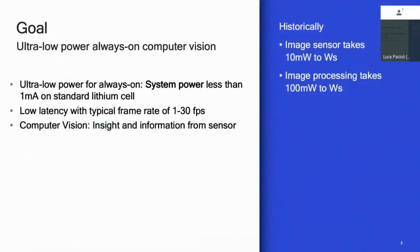What is ultra-low power always-on computer vision? Our target was to have this sensor at about 1 milliamp on a lithium-ion battery. This is important because most sensors that are always-on use about this power. You can think of accelerometers for pedometers, or audio for wake-word detection — all use about 1 milliamp on a battery.